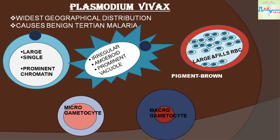Now let's see the different types of malarial parasite. First, Plasmodium vivax — it has the widest geographical distribution and causes benign tertian malaria. The ring form is large, occurs singly, with a prominent chromatin. The amoeboid form is irregular with amoeboid motility and a prominent vacuole; inside the RBCs they are large and fill the RBCs completely. The microgametocyte is smaller than the macrogametocyte, its cytoplasm stains pale blue, and its nucleus is larger and stains pale pink. The macrogametocyte is larger, with cytoplasm and nucleus staining dark, but the nucleus is smaller than that of the microgametocyte.